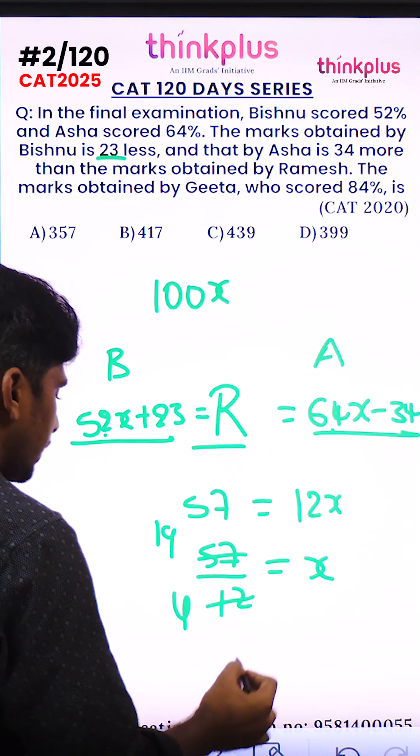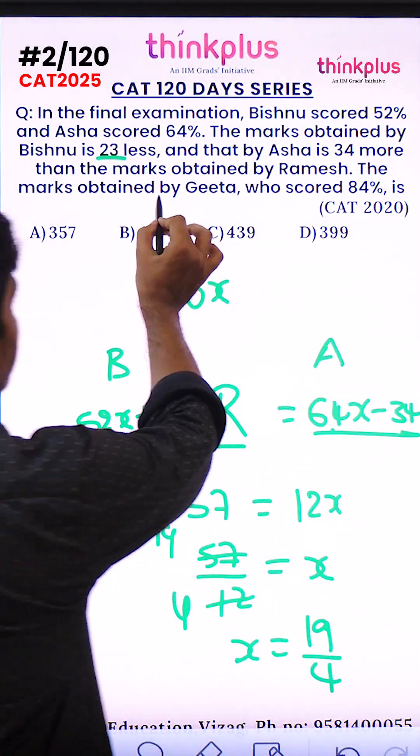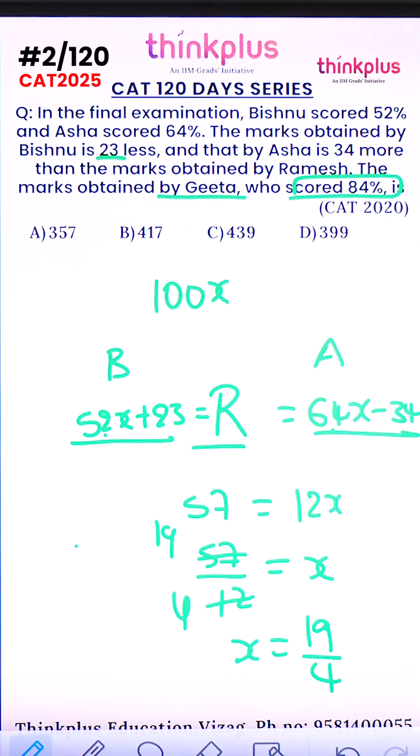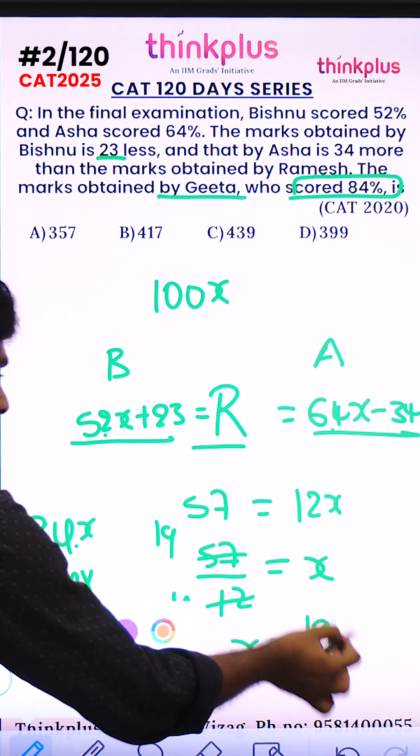Now the question asks for the final marks obtained by Geeta, who scored 84 percent. So that's 84x, and substituting x = 19/4, we get 84 times 19/4, which simplifies to 21 times 19.